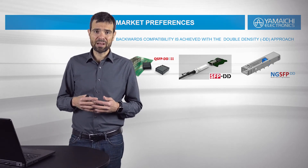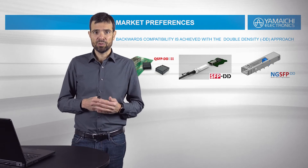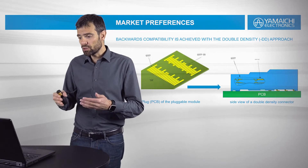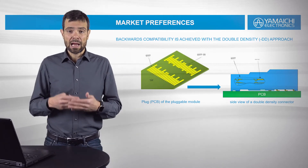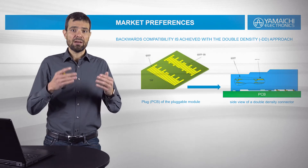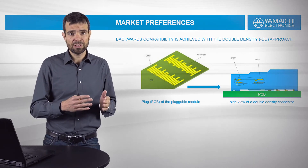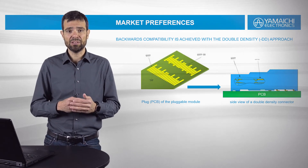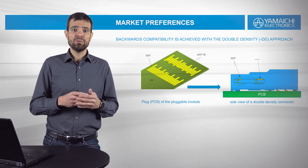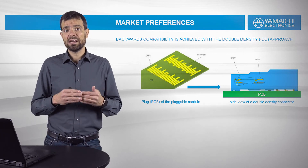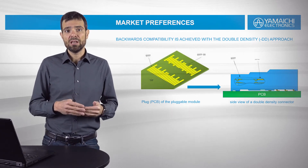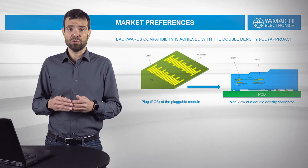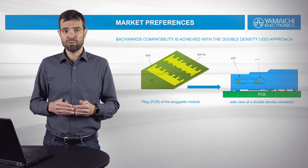These are all backwards compatible with the original form factors QSFP, SFP, and NGSFP. For those who don't know how the DD approach works: you have an old heritage row of contacts and a new row of contacts — the double density contact rows. If you use an original form factor, it will just contact with the first row. If you have the double density form factor, it will contact with both rows — the front and the rear row.